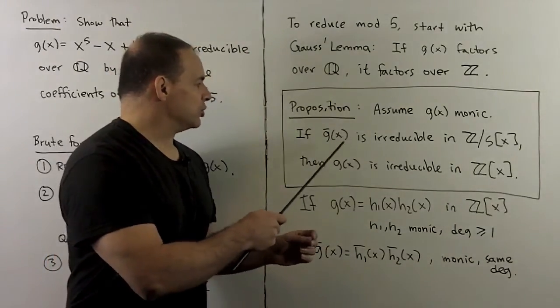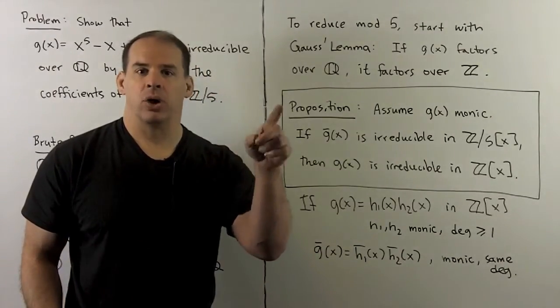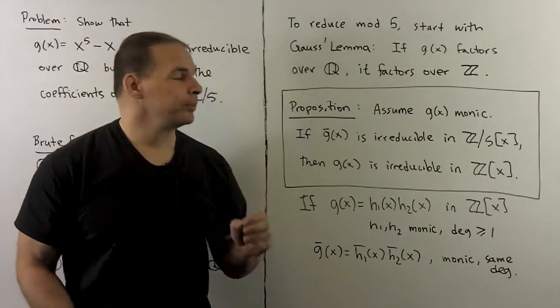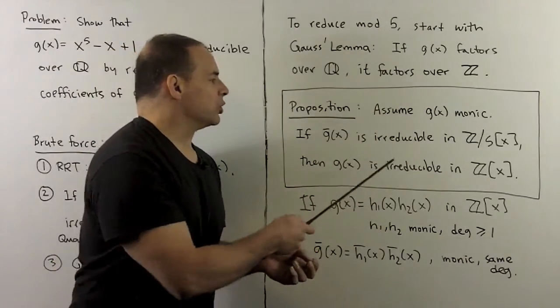If g bar, we'll call polynomial g with the coefficients reduced modulo five, so if g bar is irreducible over Z mod five, then g is irreducible over the integers.